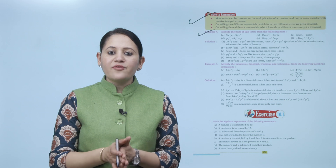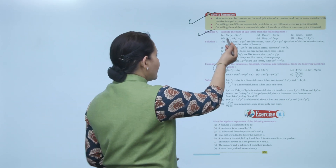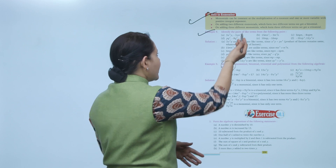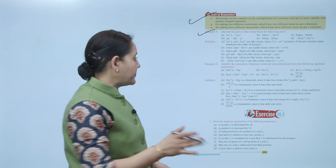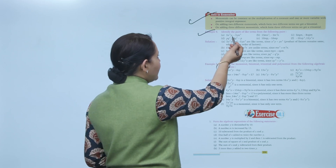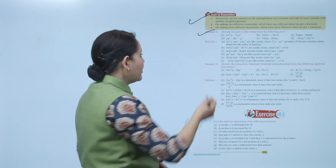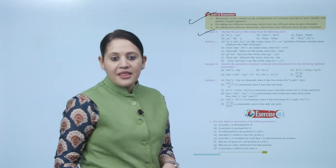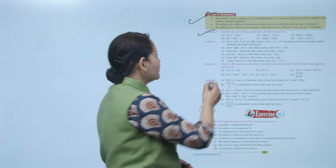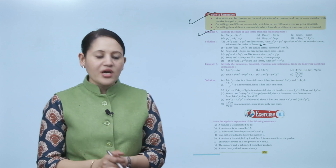Now we'll take an example. Identify the pair of like terms from the following: the first expression is 3x²y and −5yx². First we ignore the numerical part and consider only the literal part. Both contain x² and y, so the variables are the same. Checking powers: x has power 2 in both, y has power 1 in both. Therefore, they are like terms.